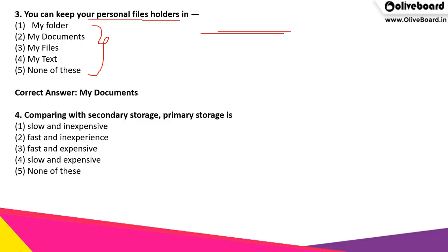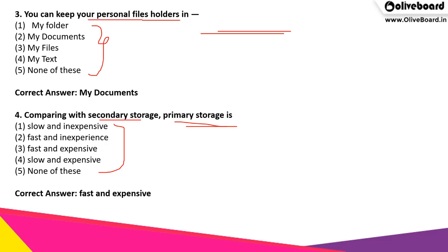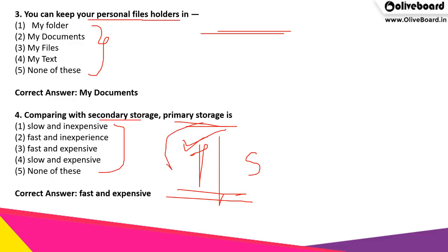The next question: compared to secondary storage, what is primary storage? Is it slow or fast? Is it expensive or not so expensive? The correct answer is fast and expensive. When we compare primary storage with secondary storage, the primary storage is very fast and hence it is very expensive also.